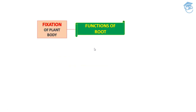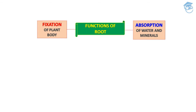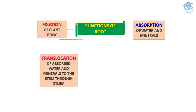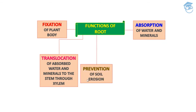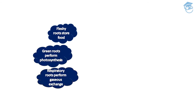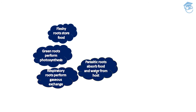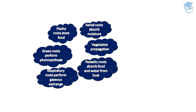Now let's see the functions of roots. First is fixation of the plant body — it helps in anchorage. Second is absorption of water and minerals because of the root hairs. Third is translocation of absorbed water and minerals to the shoot system through the conducting tissue called xylem. Fourth is prevention of soil erosion. Some plant roots perform special functions: fleshy roots store food, green roots perform photosynthesis, respiratory roots perform gaseous exchange, parasitic roots absorb food and water from hosts, and aerial roots absorb moisture.